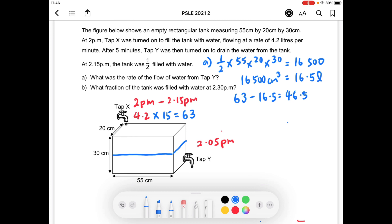So for part A, they want to find the rate of flow of water from Tap Y. We can take 46.5 divided by 10 because Tap Y was only turned on for 10 minutes from 2:05 p.m. to 2:15 p.m. So the answer for part A is 4.65 liters.